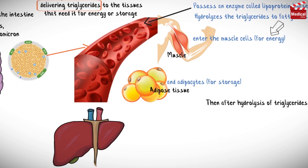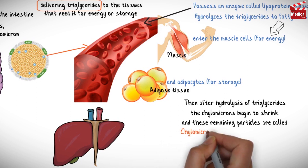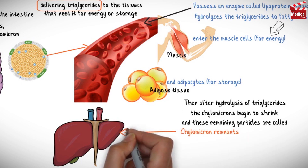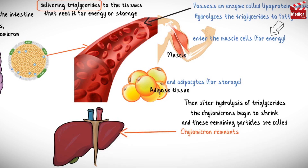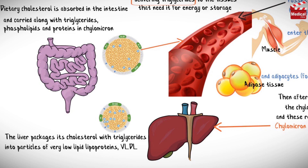After hydrolysis of triglycerides, the chylomicrons begin to shrink, and these remaining particles are called chylomicron remnants. Then they end up in the liver. The liver packages its cholesterol with triglycerides into particles of very low density lipoproteins, VLDL.